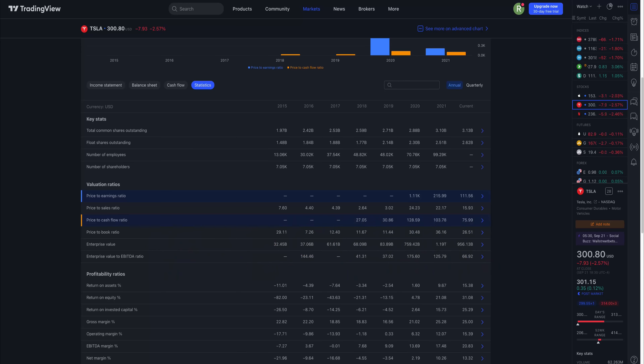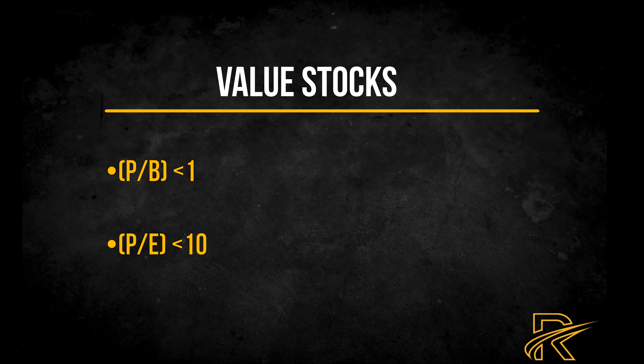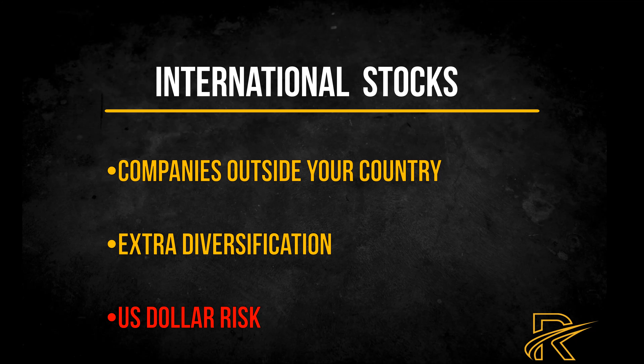The price-to-earnings ratio is used for valuing a company by measuring its current share price relative to its per-share earnings. It is used to determine whether a company is overvalued or undervalued. To calculate the P/E ratio, divide share price by diluted earnings per share. Using Tesla as an example: dividing the stock price of 303 by the diluted EPS of 2.77 gives a result of 109. Always use the current numbers from the TTM (trailing 12 months).